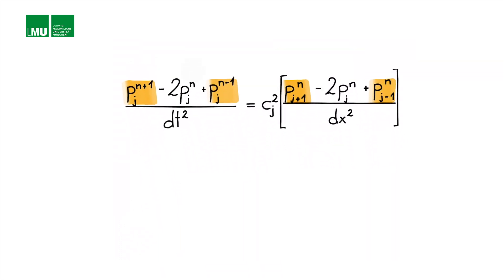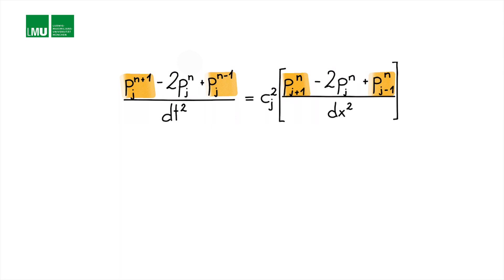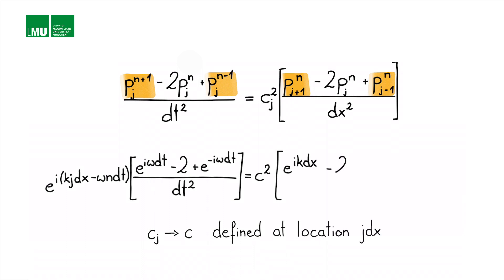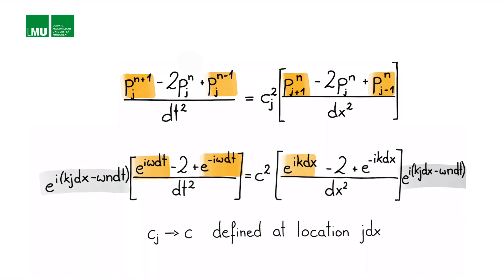We replace the finite difference terms with exponential terms, extracting the basic plane wave definition. On the left-hand side we get the discrete plane wave multiplied by (e to the i·omega·dt minus 2 plus e to the minus i·omega·dt) divided by dt squared. On the right-hand side we have the velocity squared times the equivalent second-derivative form, also multiplying the fundamental plane wave solution, with no source term.